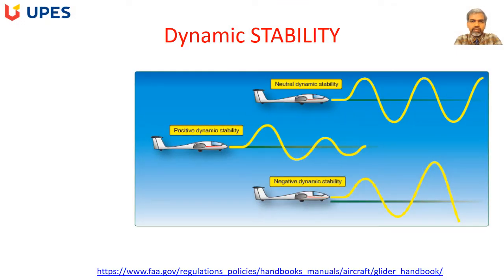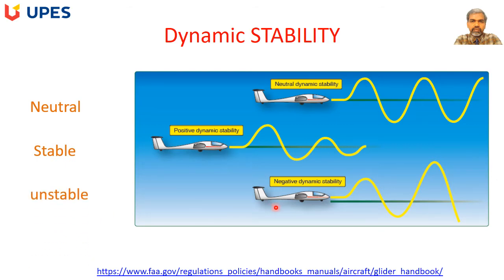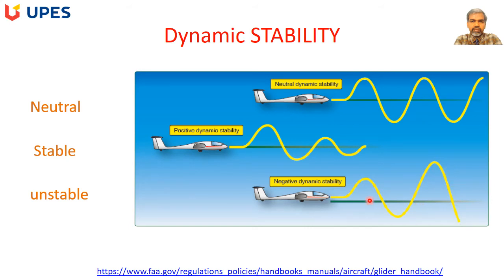For dynamic stability, we again have neutral, stable, and unstable behaviors. If the amplitude of a disturbance remains the same over time, the airplane is neutrally dynamically stable. If the amplitude reduces over time, the airplane is dynamically stable with positive dynamic stability. If the disturbance amplitude increases over time, the airplane is dynamically unstable.